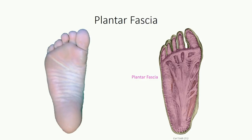Its thickest point is the plantar aponeurosis, formed by dense regular connective tissue that projects from the calcaneal heel to the digital expansions. It provides an extra layer of protection to sensitive deeper structures and supports the longitudinal arch of the foot. Microtrauma to its attachment point on the calcaneus is associated with plantar fasciitis, which results in pain and inflammation, particularly when initiating movement after long periods of rest.